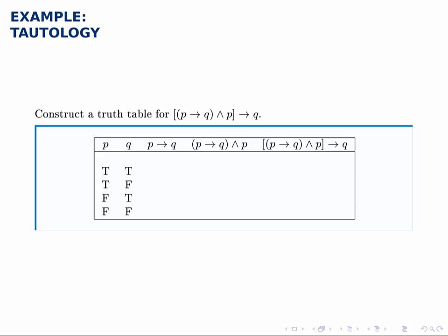Now first, this truth table might look daunting, but if you look carefully at the statement, start with the innermost parentheses. We've got a conditional statement, P implies Q, then we take that and combine it with P using AND, so that's going to be another column. So we have one column for the implication, one column for combining that with P...